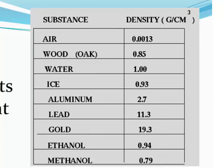Ice, which is the solid form of water, is less dense than liquid water at only 0.93. Water is 1.00, and there are many other liquids with lower densities than water, such as ethanol at 0.94 and methanol at 0.79 grams per cubic centimeter. Air, being the only gas in this table, has a much lower density because there's a lot of space between those particles — its density is only 0.0013 grams per cubic centimeter.